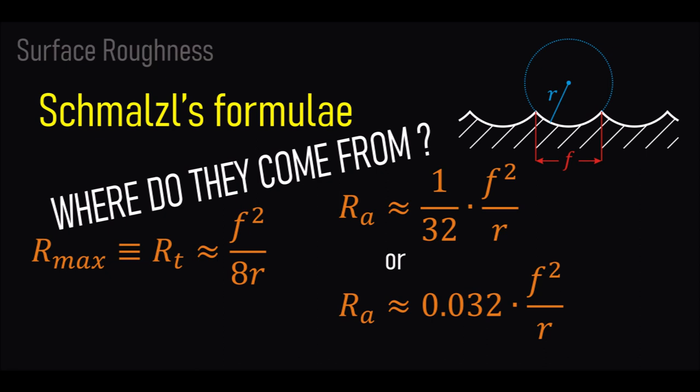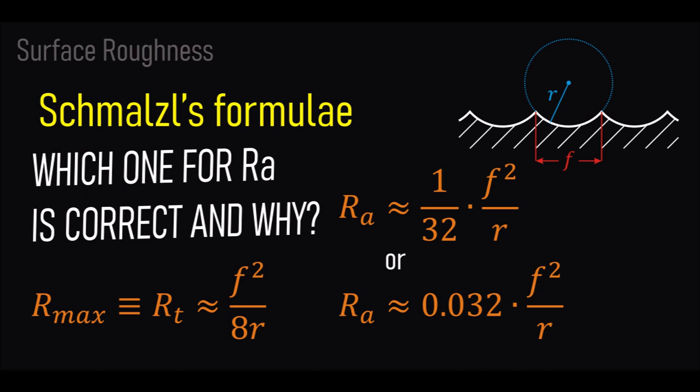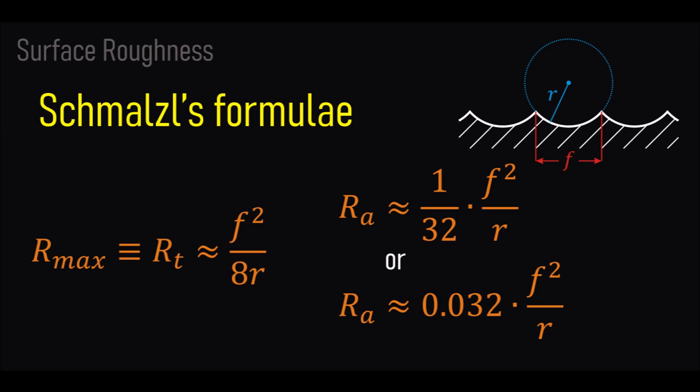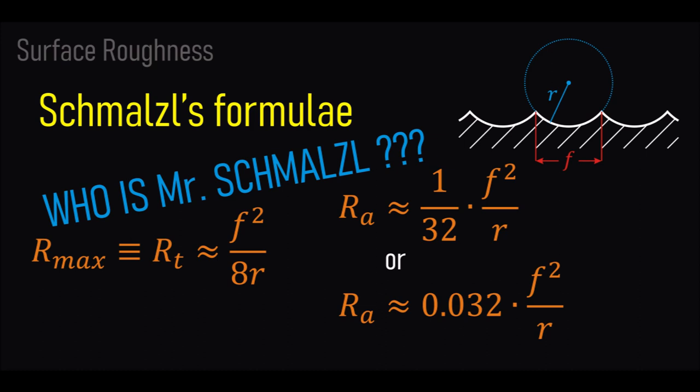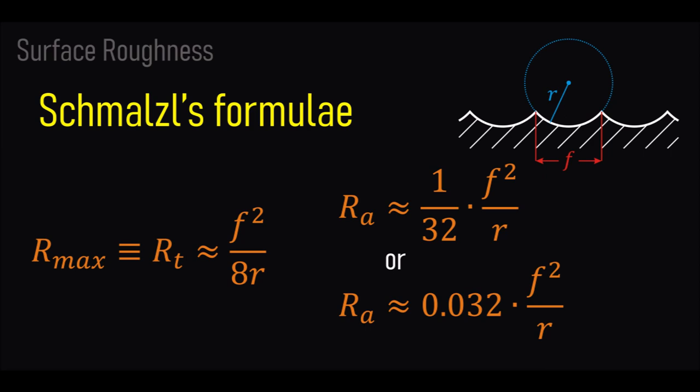So, where do the Schmales formulae come from? Is there just a numerical approximation approach behind those formulae, or is there a deeper mathematical meaning? Which formula for the average roughness is correct and why? The truth is we don't know — at least I don't know, since I couldn't find any explanations anywhere. This video is basically my own unconditioned attempt at finding out the answers to those questions, relying just on my own investigation, as I couldn't find any source material.